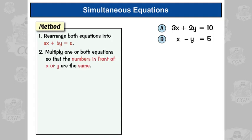Number two, multiply one or both equations so that the numbers in front of x or y are the same. So with this equation, we could either multiply it by three, so we get a three here and we've got a three there, or we could multiply it by two. So we've got two there, and a two there.